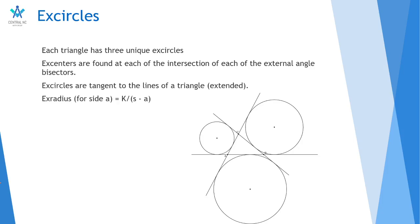So let's move on to excircles. Excircles might be new to some of you, but most of you guys probably know them, just never use them. So each triangle has three unique excircles, one tangent to each side. And the centers of these circles are actually found by the intersection of the angle bisectors to the external angles. So that being the supplement of a normal angle.